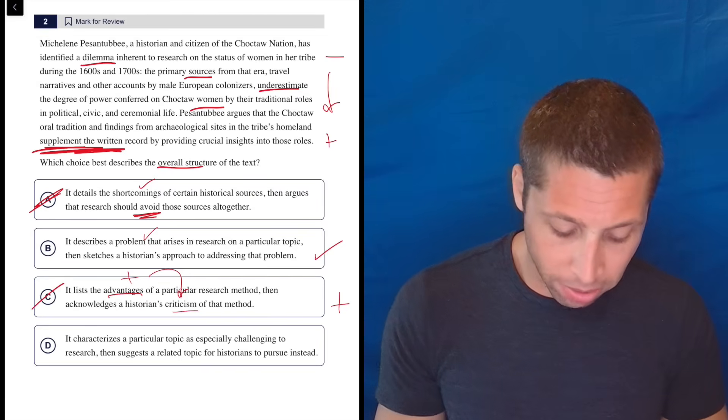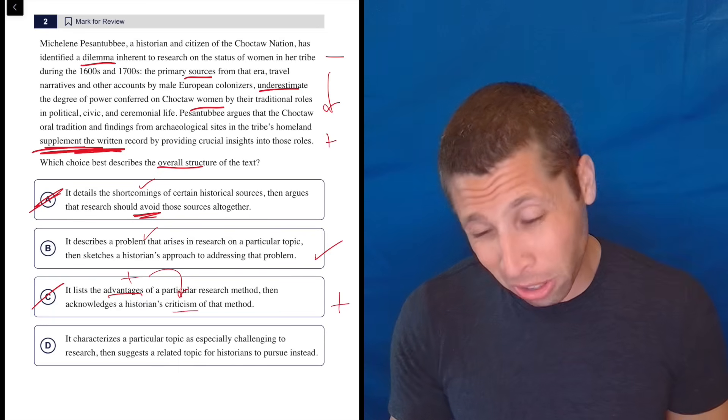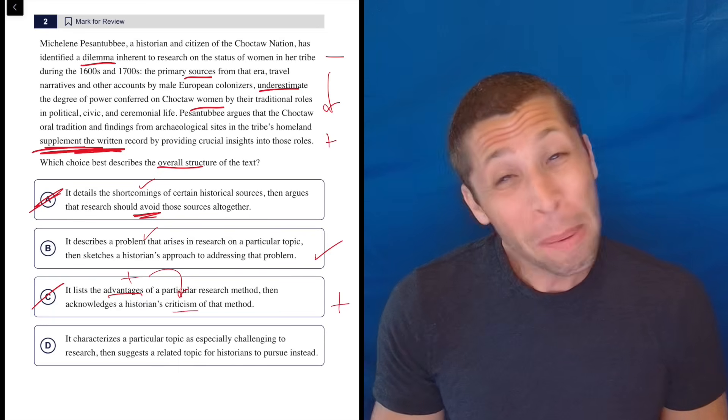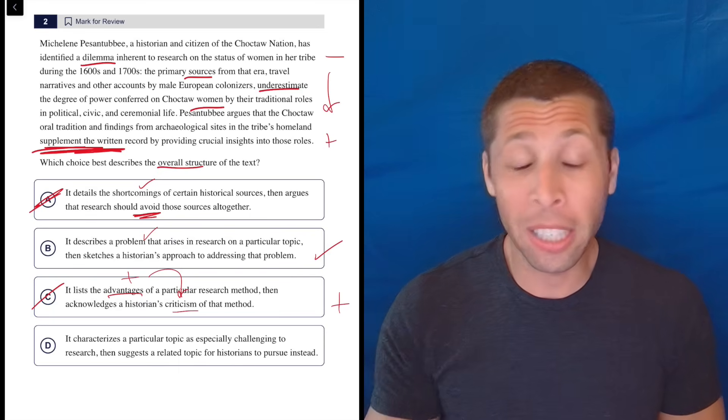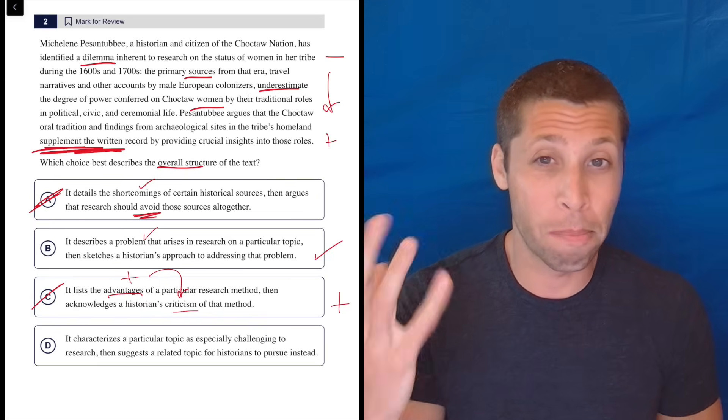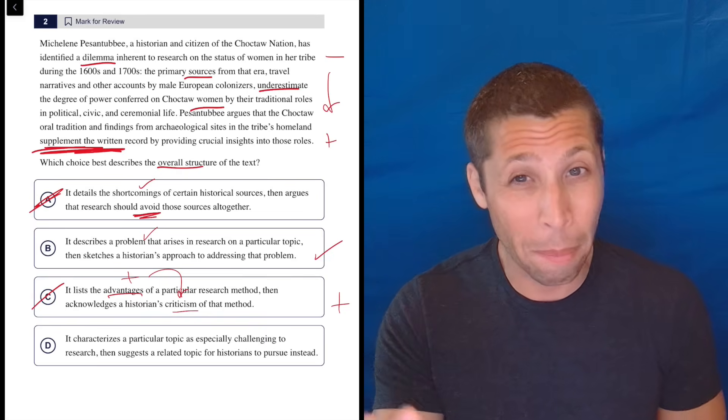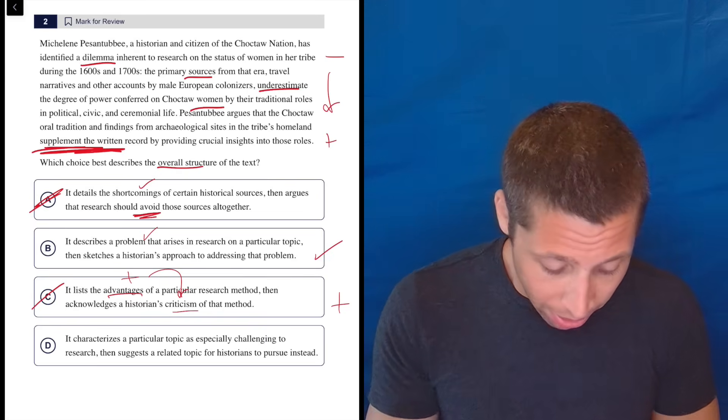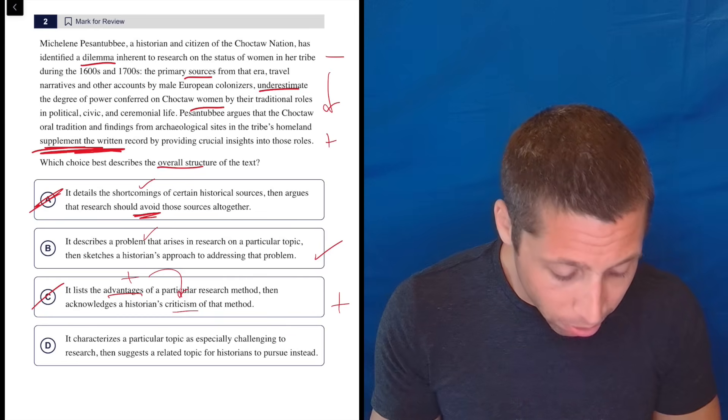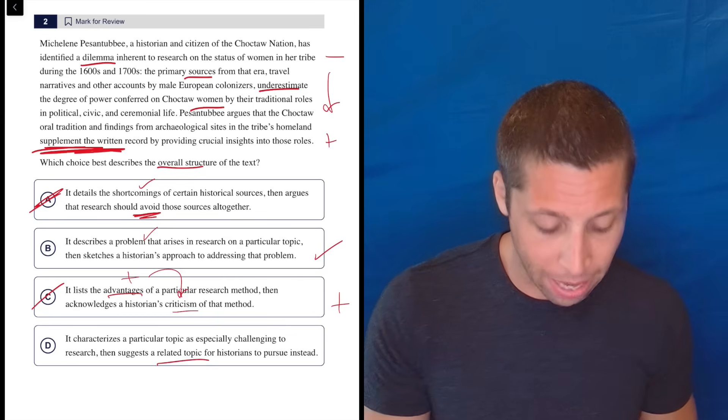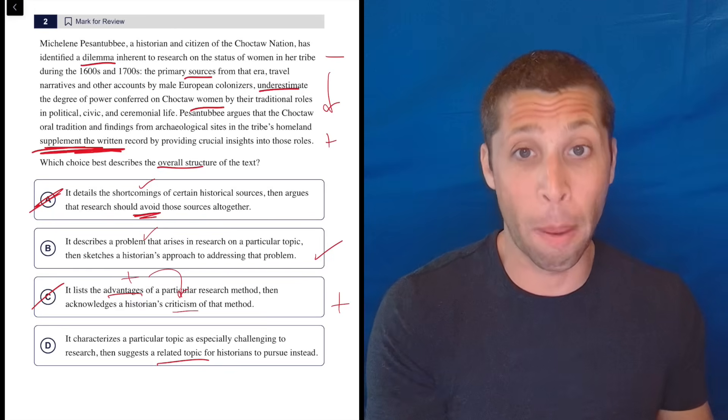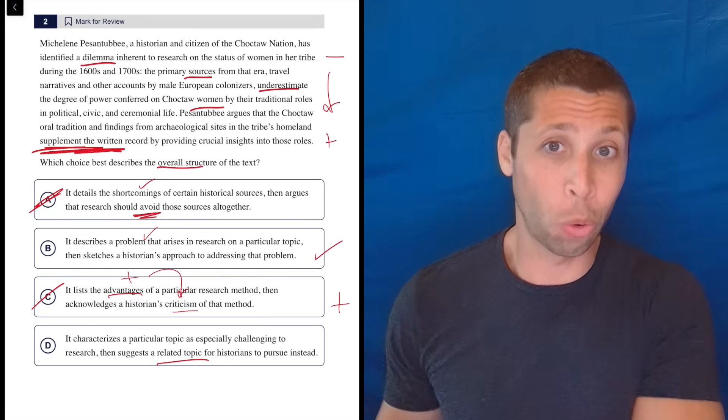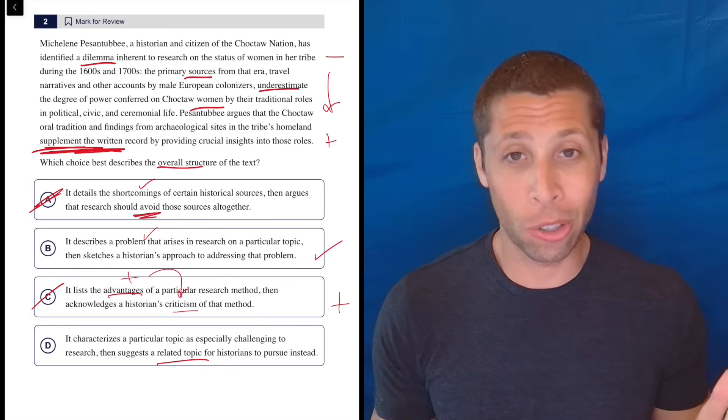D, it characterizes a particular topic as especially challenging to research. Maybe. Maybe it's challenging. Why is it challenging? It's challenging because there's all these male sources and we're trying to research women. Okay, maybe. Then suggest a related topic for historians to pursue instead. No, they are not pursuing a related topic. They are pursuing the same topic by looking at different sources. So we have not switched topics.